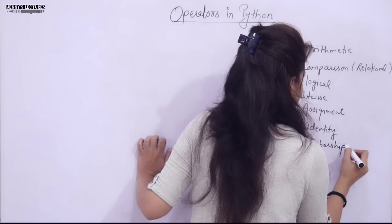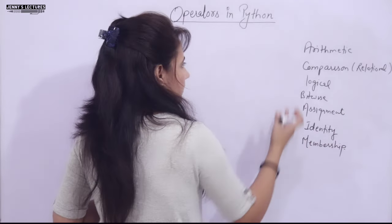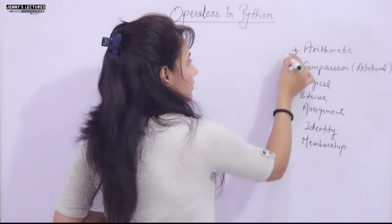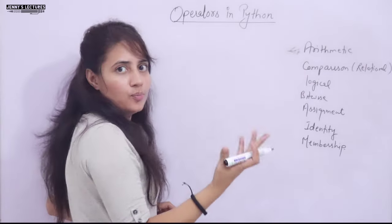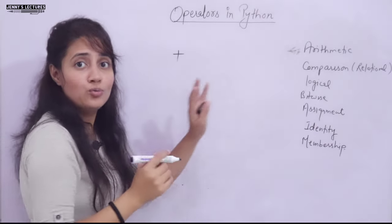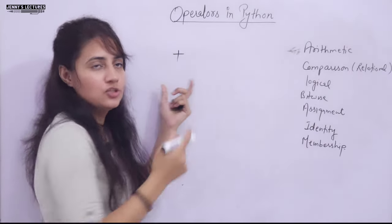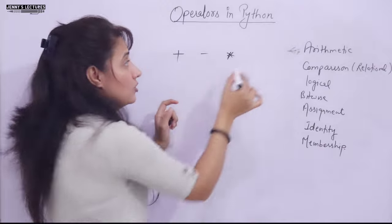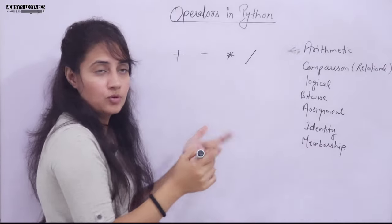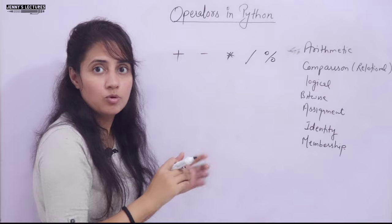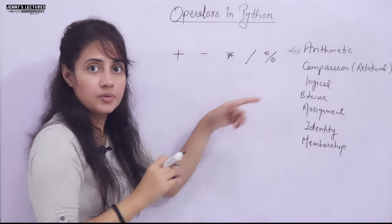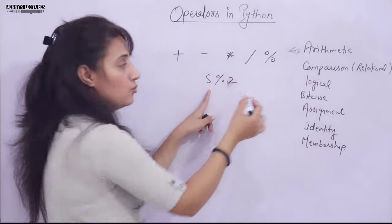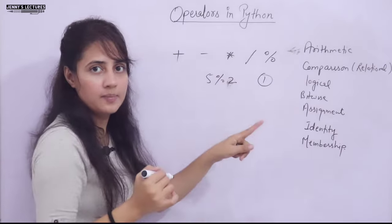The arithmetic operators include: plus for addition, minus for subtraction, star (*) for multiplication, slash (/) for division, and percent (%) for modulus — which gives the remainder. For example, 5 % 2 gives 1, because dividing 5 by 2 leaves a remainder of 1.